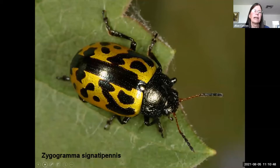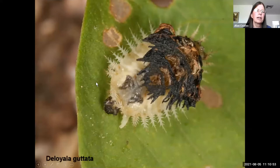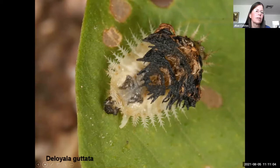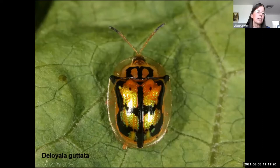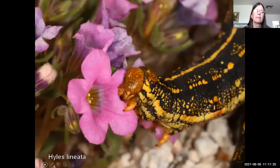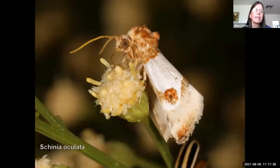Many chrysomelid beetles have evolved the ability to sequester or metabolize toxins that plants produce in defense against herbivory, and when they sequester those toxins they can actually deploy them for their own defense. Here's a chrysomelid beetle larva on a convolvulucid plant, and that's what it looks like as an adult — a beautiful gold and black tortoise beetle. Caterpillars are more or less eating machines; some are generalists like the white-lined sphinx moth caterpillar.